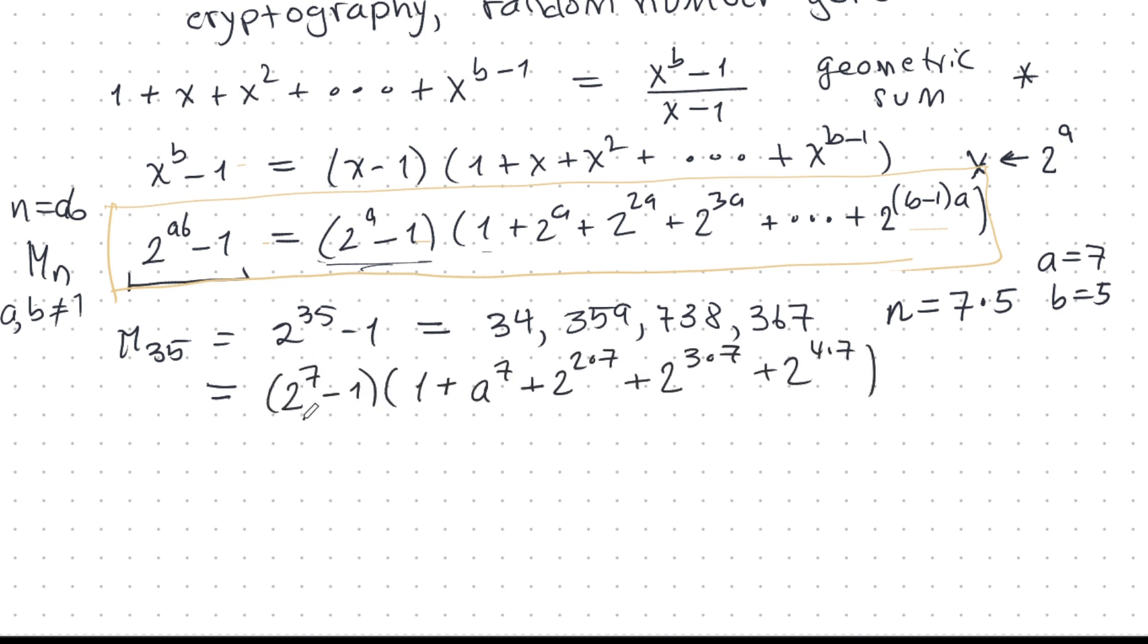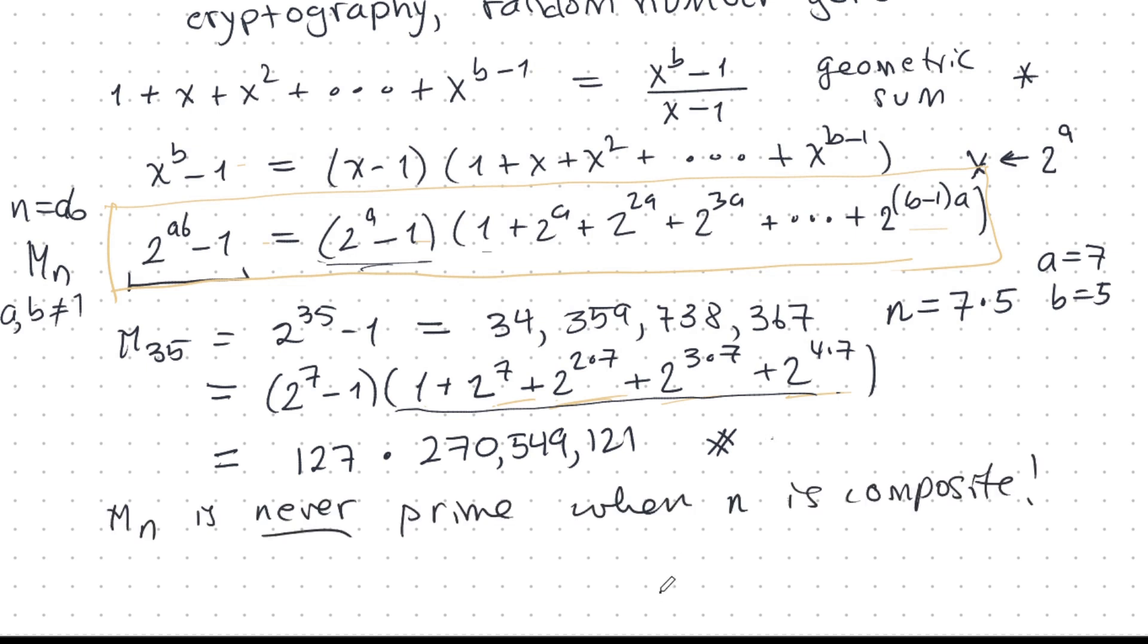All right, so we have, this is actually our Mersenne number Mn, if n is a times b. And if a and b are not 1, then this is non-trivial factorization. This is not going to be 1 either. And here I've got some sum, which is my other factor. So, let's take an example of this. This, M35, that's 2 power 35 minus 1. So, that's some huge number there, 34 billion something or other. And this here is a factorization of the Mersenne number when n is composite. n is composite because we can take n to be 7 times 5, for example. So, a is 7 and b is 5. Let's try that.